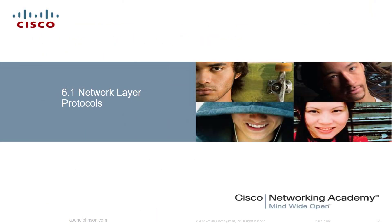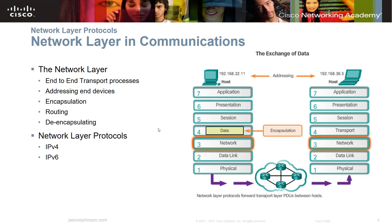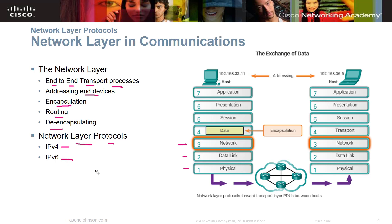So 6.1, Network Layer Protocols. What is the network layer? The network layer is layer three of the OSI model. In the previous chapter, Chapter 5, we looked at the physical and data link layer, and we looked at switches. In this video, we're going to look at the networking layer. The networking layer provides end-to-end transport processes. It addresses end devices, it encapsulates, it routes, and it de-encapsulates.